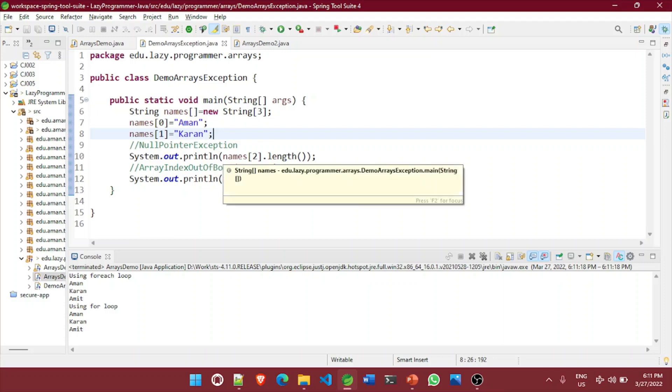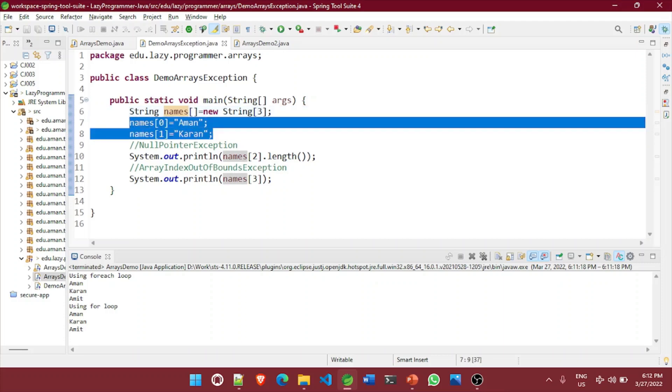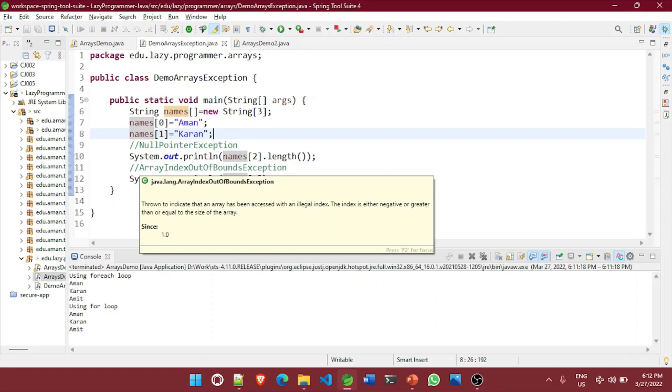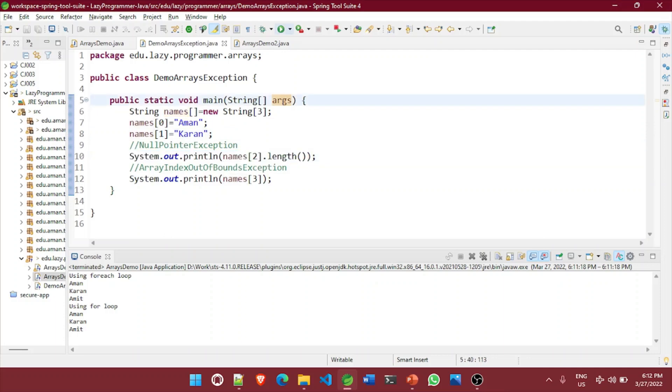Now let's discuss a couple of exceptions that may occur during your program execution. The first one is null pointer exception. So here this is an array names of size three and to the first and second element I have already assigned values. But the third component in array is null because I have not assigned any value. So if I try to access that and try to invoke any kind of function on top of that, I will be getting null pointer exception at line number 10. Let's try to execute this program.